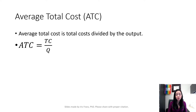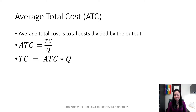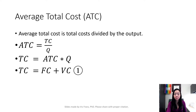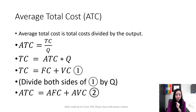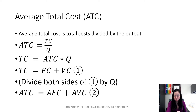Average total cost is equal to total cost divided by quantity. Or you can also say total cost is equal to average total cost times quantity. If you remember from the previous slides, total cost is equal to fixed cost plus variable cost — we call that equation 1. Now dividing both sides of equation 1 by quantity: on the left side, total cost divided by quantity equals average total cost. On the right side, fixed cost divided by quantity equals average fixed cost, and variable cost divided by quantity equals average variable cost. So equation 2 is: average total cost equals average fixed cost plus average variable cost.